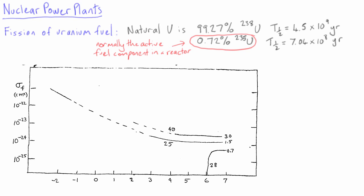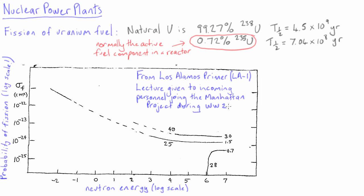The picture shown here is taken from the Los Alamos Primer, a book that summarizes the lectures given to incoming personnel in the Manhattan Project. It shows the probability that a neutron will induce the fission of a uranium nucleus as a function of the energy of the neutron. Both axes are plotted on a log scale. The labels are in codes, since this was a top-secret project at the time.